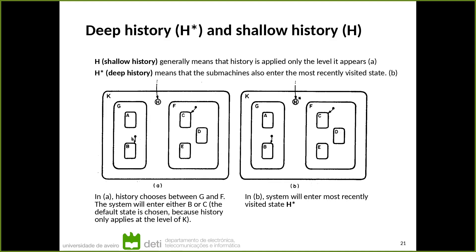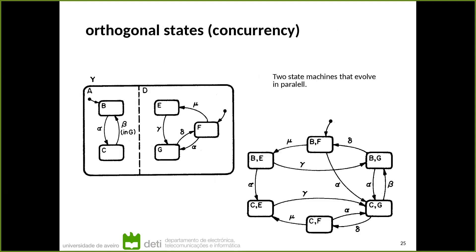Another concept is orthogonal states, or concurrency. Orthogonal states means state machines that run in parallel and evolve independently. Of course, actions in one may affect the other, but the execution of one occurs at the same time as the other — they are concurrent state machines. This is a mechanism in state diagrams that allows simplifying many state machines significantly.